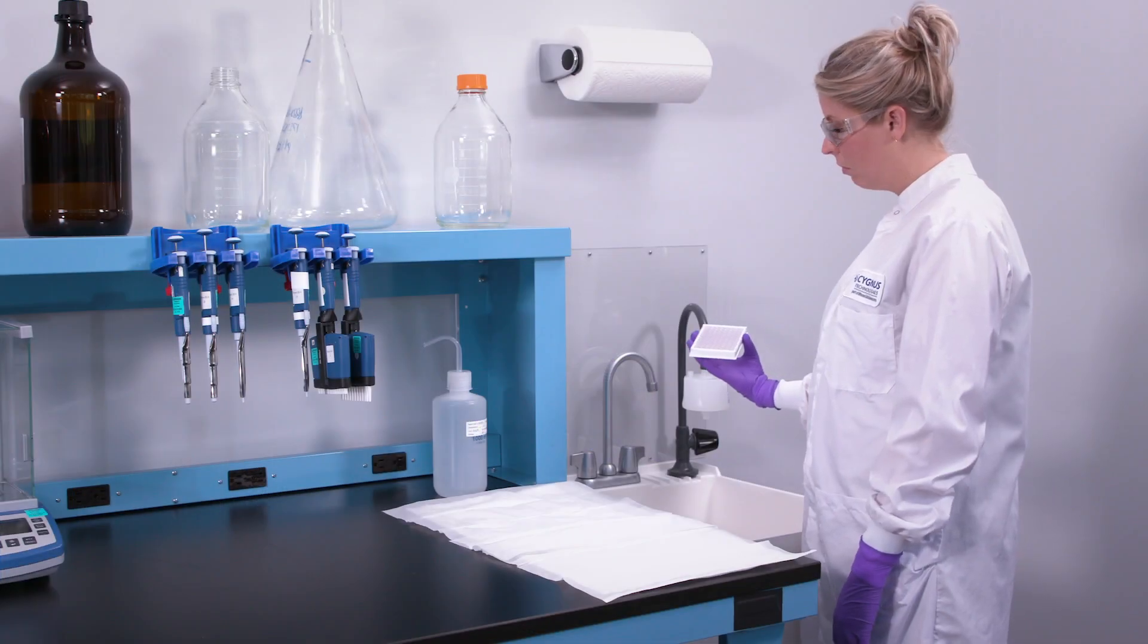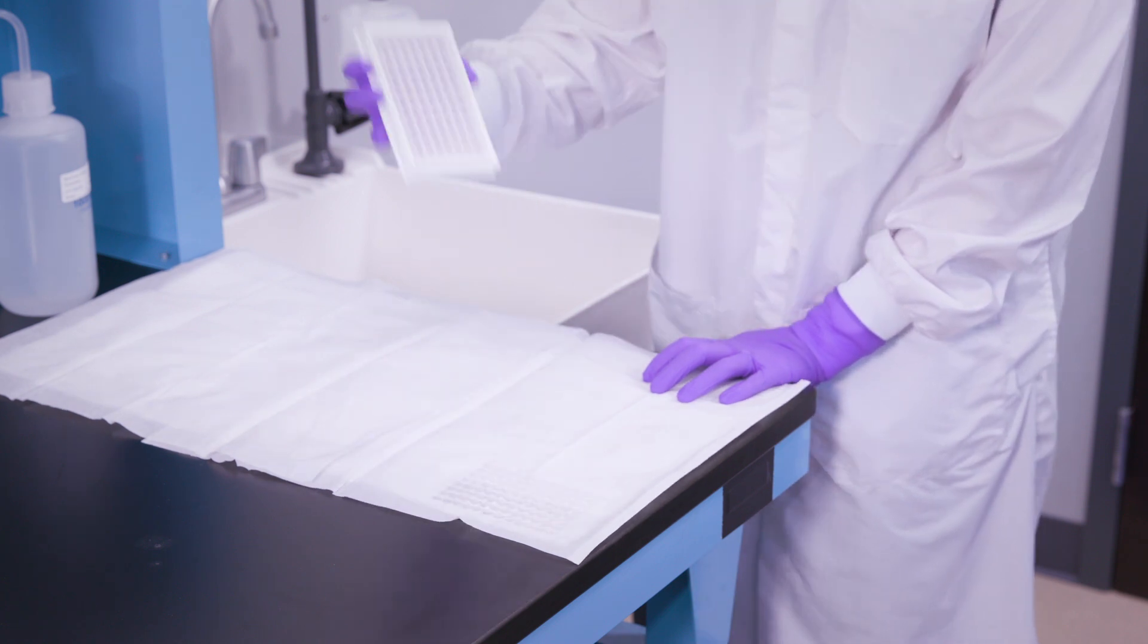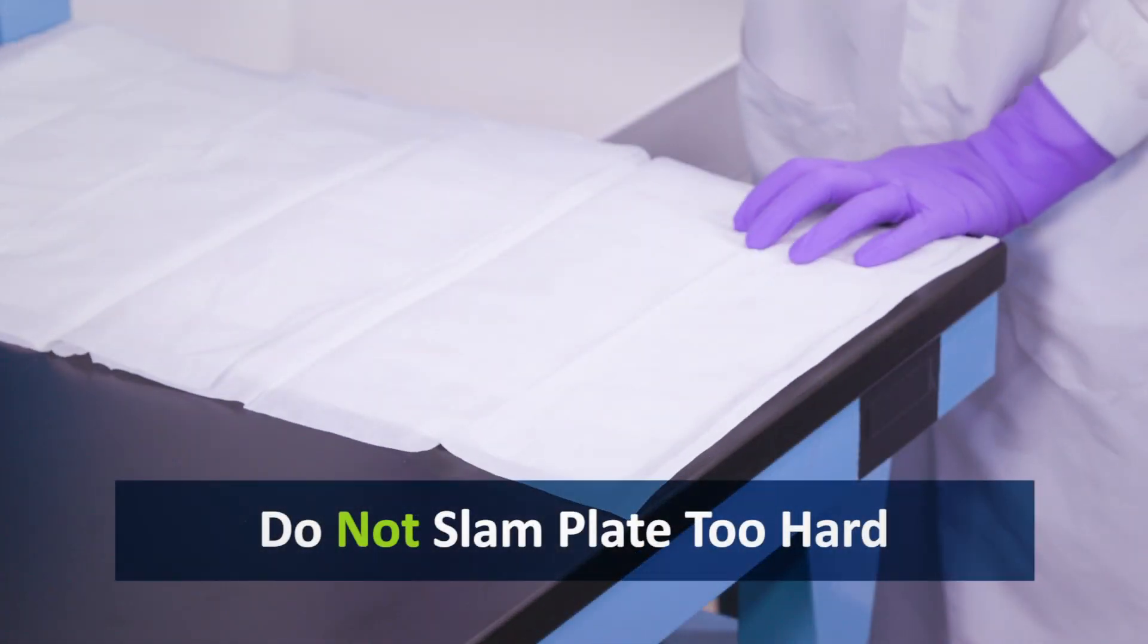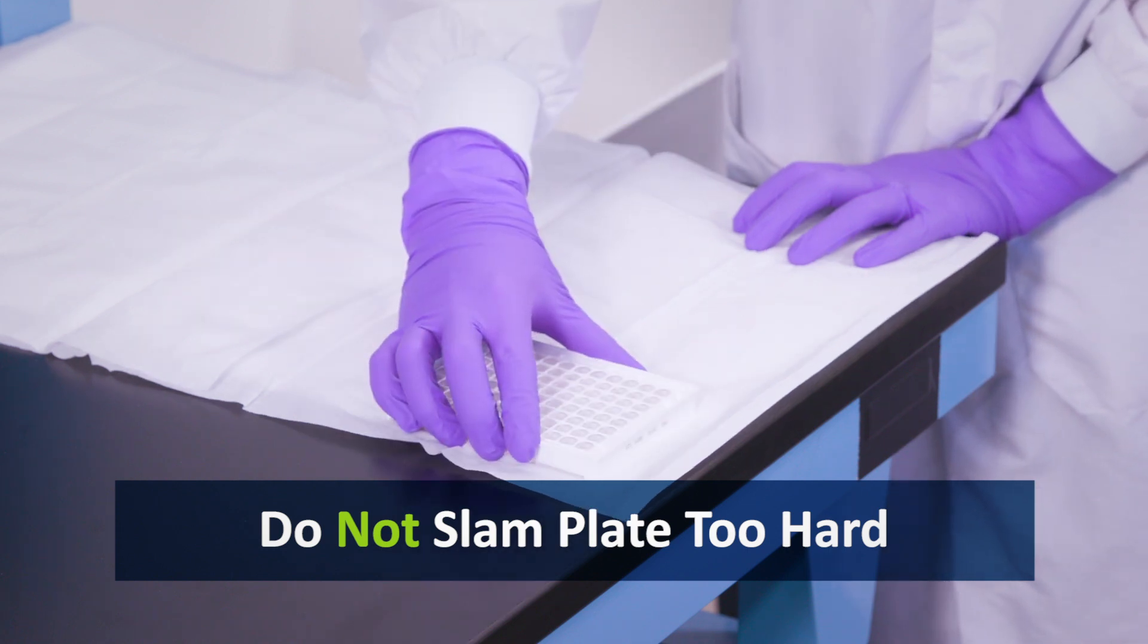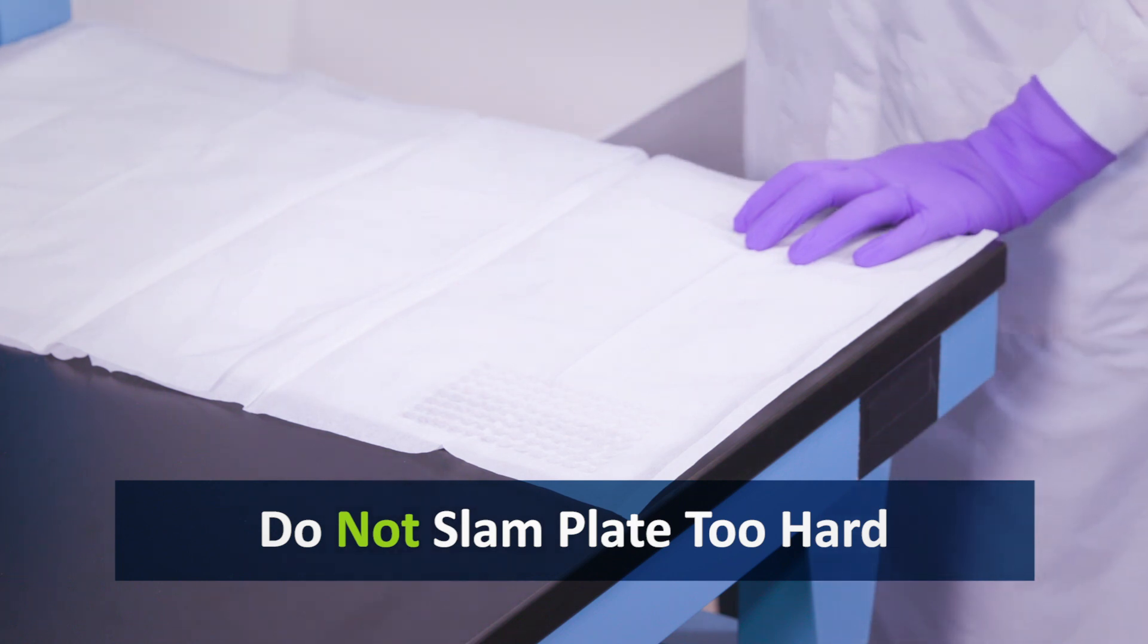Next, immediately tap the plate gently and evenly on your blotting paper once. Do not slam the plate too hard, as this may cause variable dissociation due to the transference of unequal amounts of shock energy across the plate.